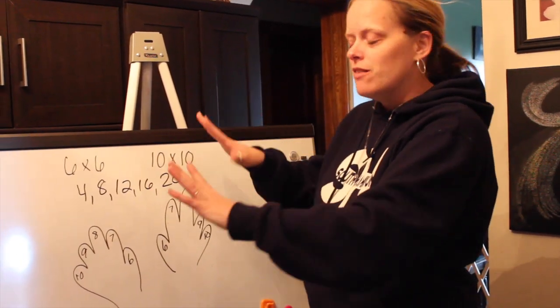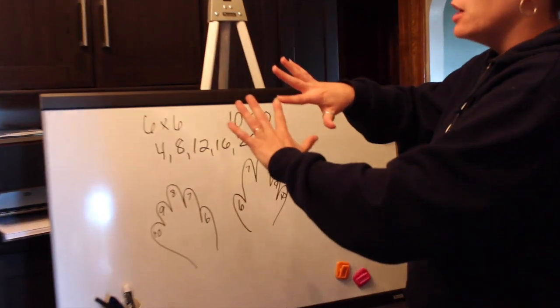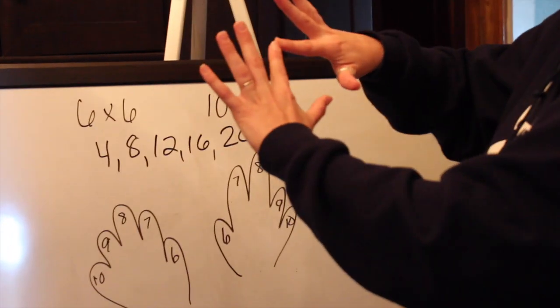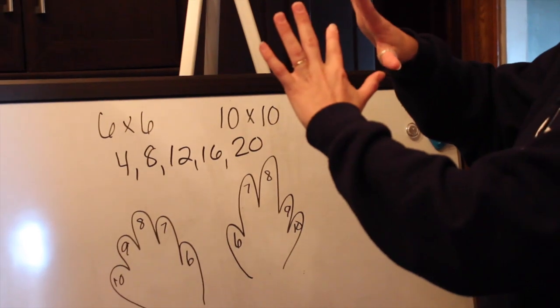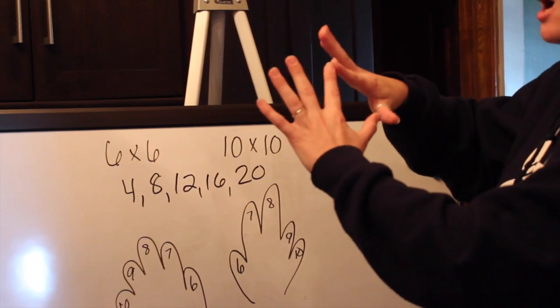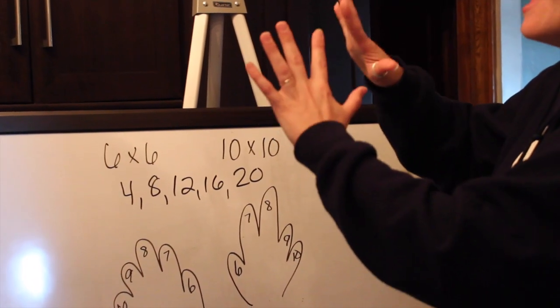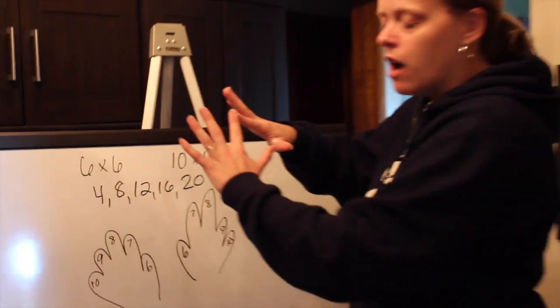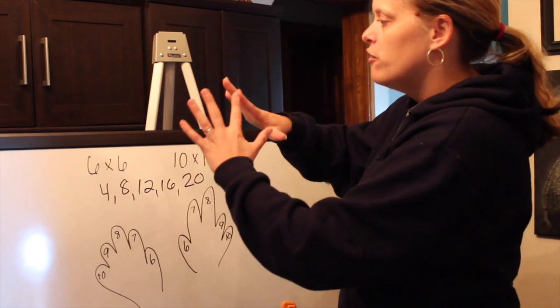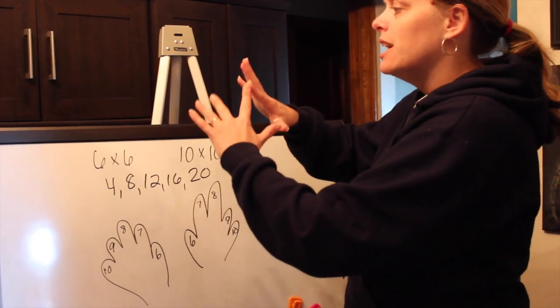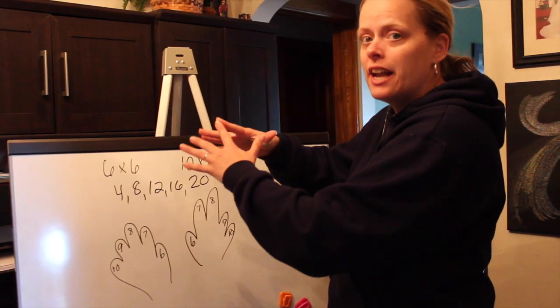We're going to do 7×7 next. 7×7, you put your 7 here and your 7 here together. You'd have 10, 20, 30, 40, so all the fingers leading up to the joining fingers are 10's, and your joining fingers are 10's as well. 10, 20, 30, 40, and 3×3 is 9. 40 plus 9 is 49.